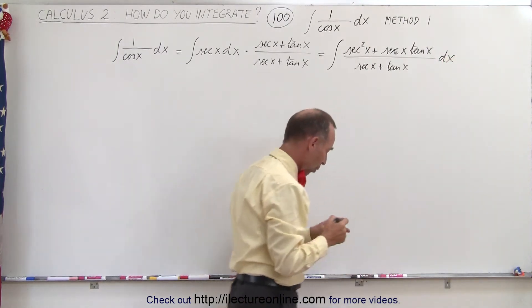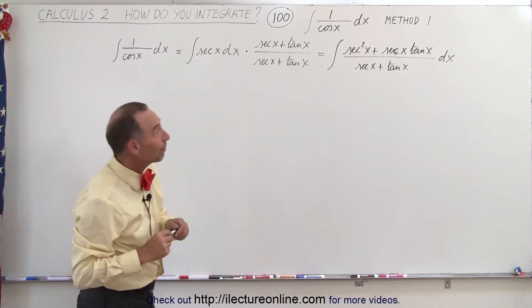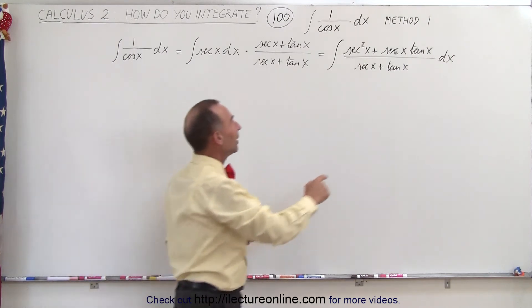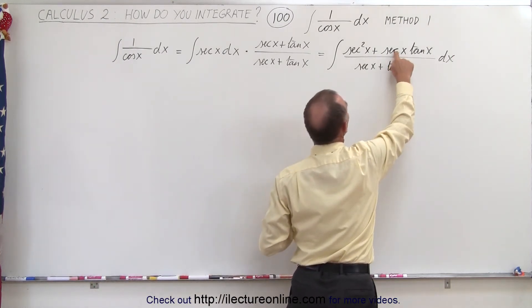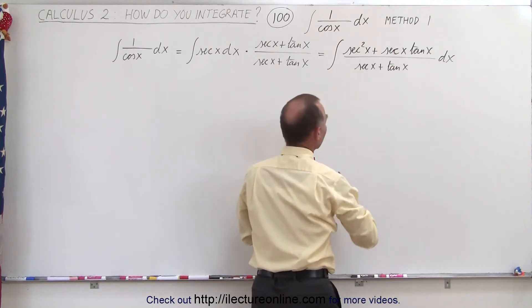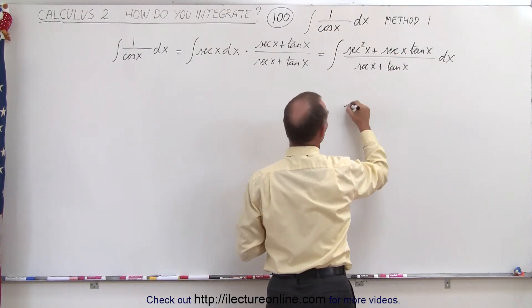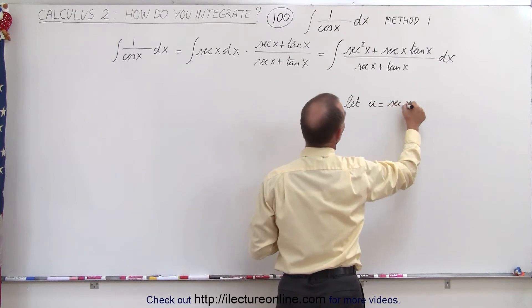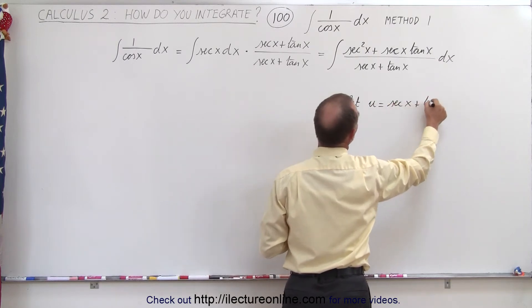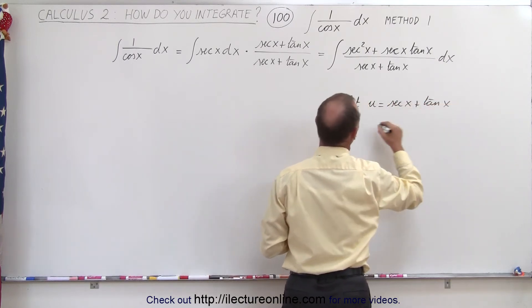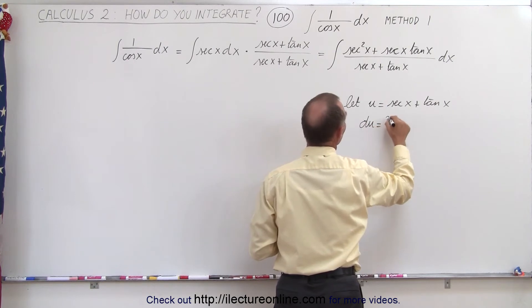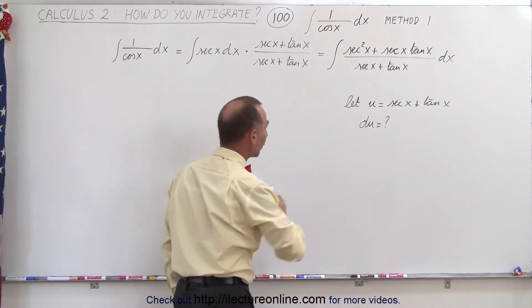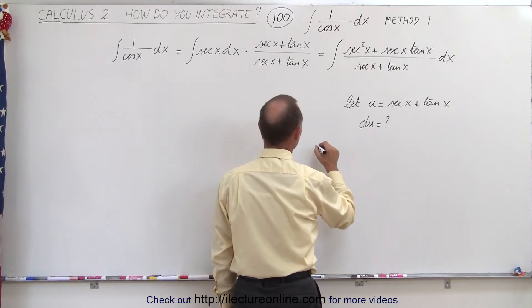But now what we can do is the following. Let u equal the secant of x plus the tangent of x. So what is du equal to in this case? Well, let's figure it out. We're going to do this one piece at a time.